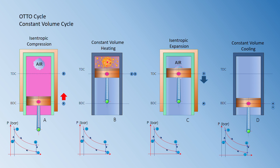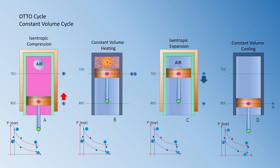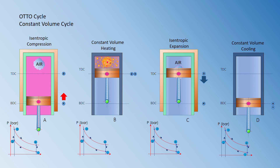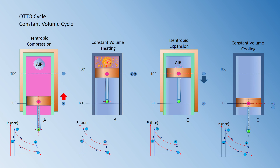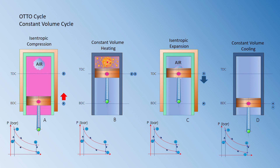The volume decreases from V1 to V2, shown by the arrow moving from state point 1 to state point 2 on the PV diagram. The air inside the cylinder is compressed as the piston moves from the bottom dead center (BDC), also called the outer dead center, to the top dead center (TDC), also called the inner dead center.